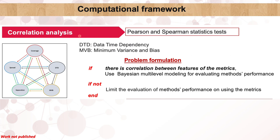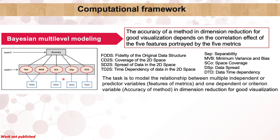In the correlation analysis, we use Pearson and Spearman coefficients to measure the statistical relationship between the features of the metrics describing the accuracy of the method. The computational framework is based on the condition that if there is a correlation between the features of the metrics for good visualization and interpretability, then the evaluation of the methods should take account of that correlation in the Bayesian multi-level modeling. In the case there is no relationship between the features of the metrics, the evaluation of the methods could be limited to just using the metrics independently. The task of the Bayesian multi-level modeling is to explain the relationship between multiple independent predictor variables, which are the features of the metrics, and one criterion variable, which is the accuracy of a method. It leads to modeling the conditional effect of the metrics on the performance of the method designed for the reduction of high-dimensional data.